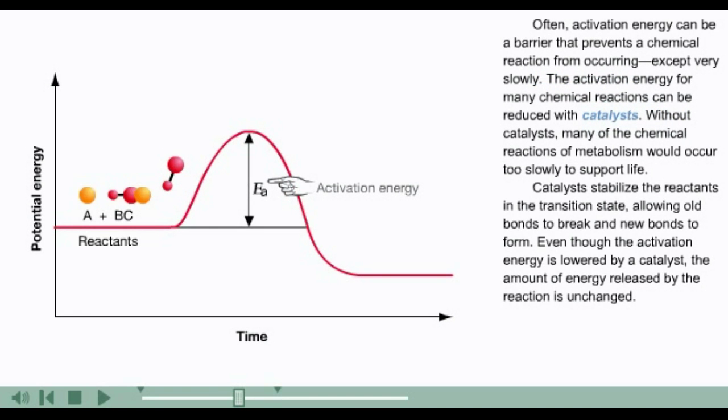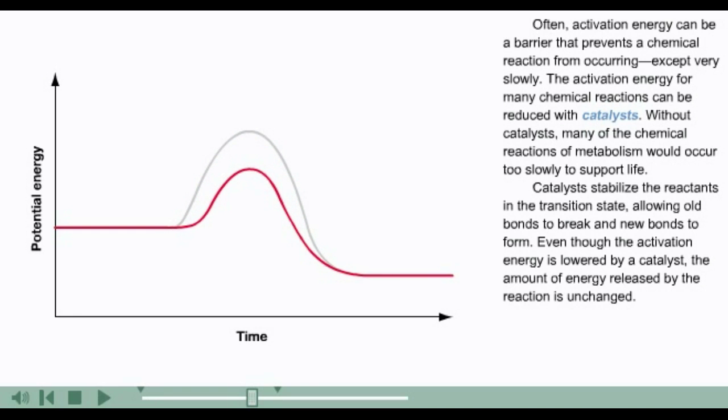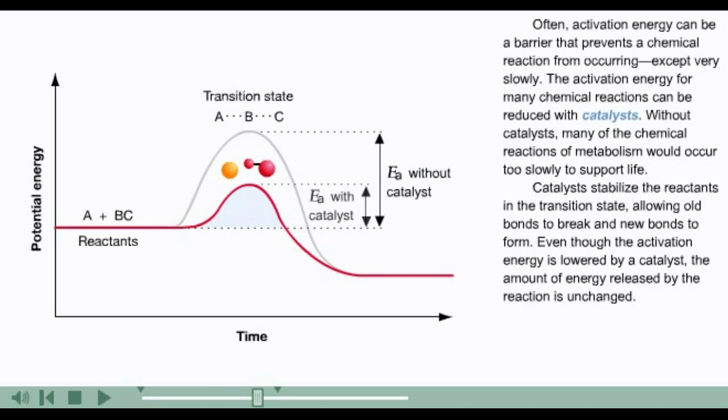Often, activation energy can be a barrier that prevents a chemical reaction from occurring, except very slowly. The activation energy for many chemical reactions can be reduced with catalysts. Without catalysts, many of the chemical reactions of metabolism would occur too slowly to support life.